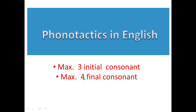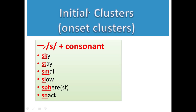Initial clusters are also called onset clusters. First, let's look at clusters beginning with S. The sound of S is /s/, followed by another consonant: S-K in 'sky', S-T in 'stay', S-M in 'small', S-L in 'slow'. Note that PH always gives the sound of F, so in 'sphere' we have S and F. Also S-N in 'snack'.